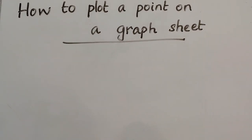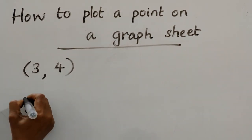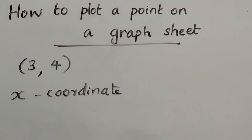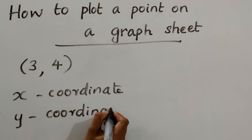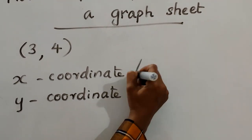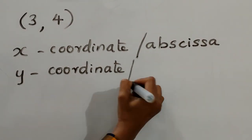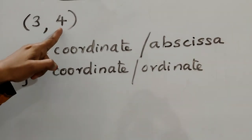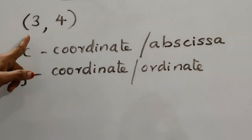Suppose the point is (3, 4). The first number is the x coordinate, so here the x coordinate is 3. The second number is the y coordinate, so here the y coordinate is 4. Another name for the x coordinate is abscissa, and another name for the y coordinate is ordinate. So the abscissa is 3 and the ordinate is 4. We can say that the coordinates of the point are (3, 4).